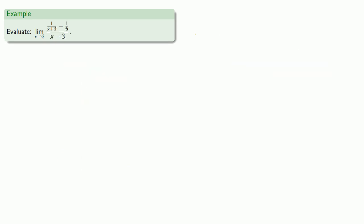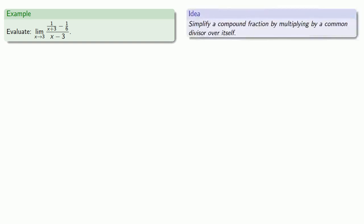Another important algebraic case occurs when we have a limit of a compound fraction. And here, an algebraic simplification that we can do is to simplify a compound fraction by multiplying by a common divisor over itself.